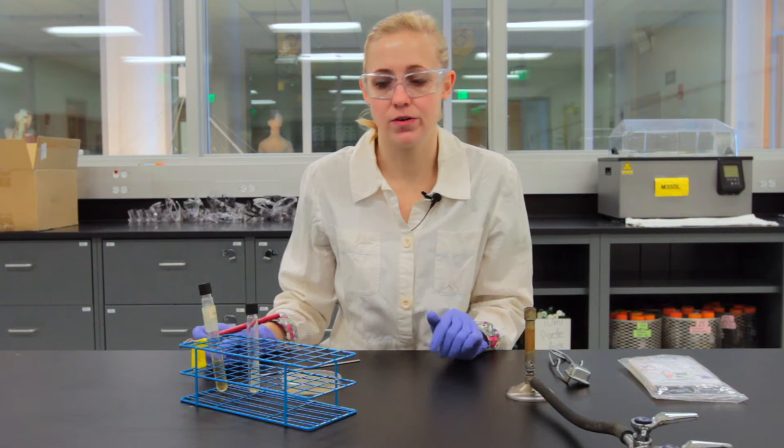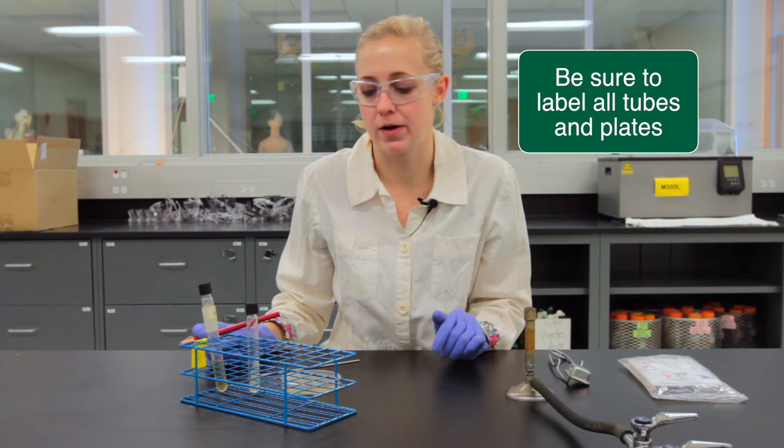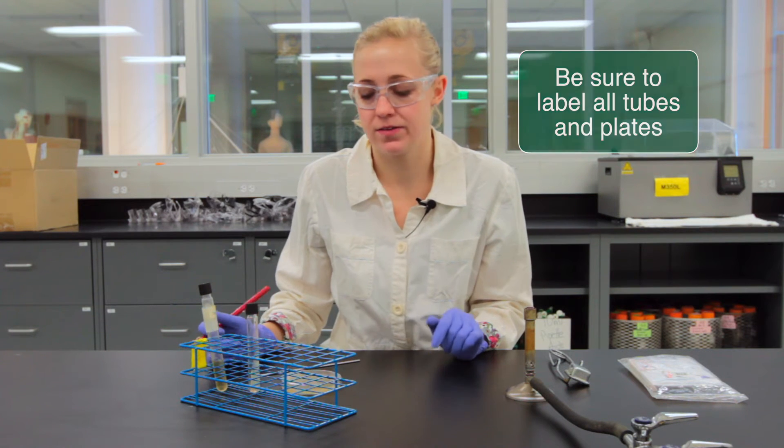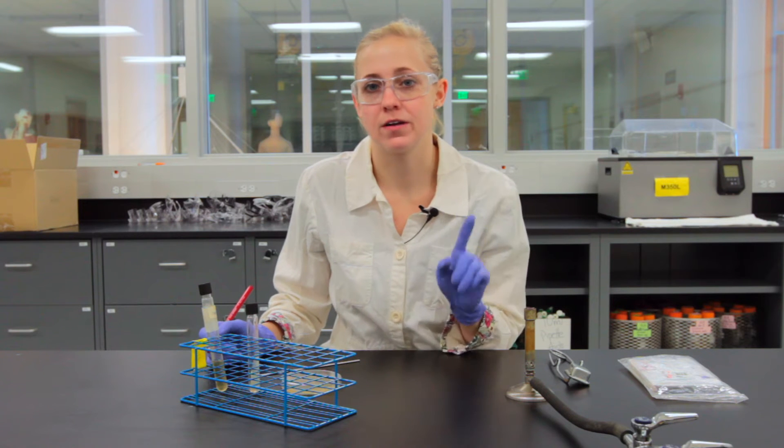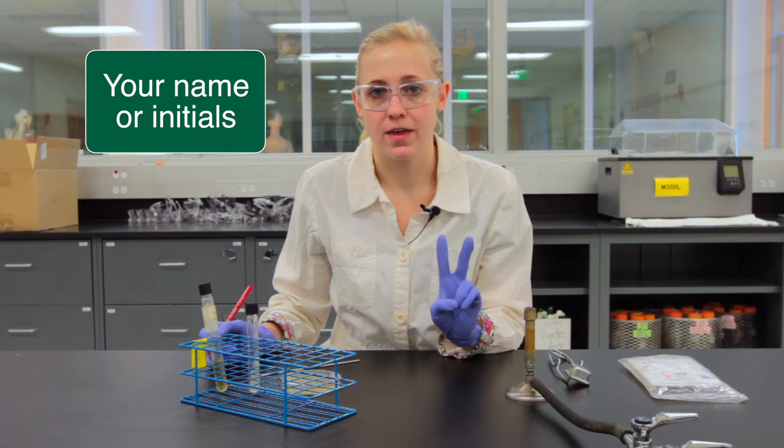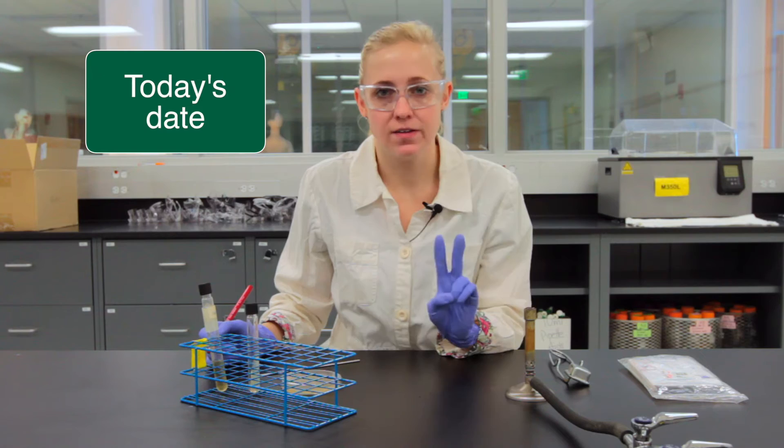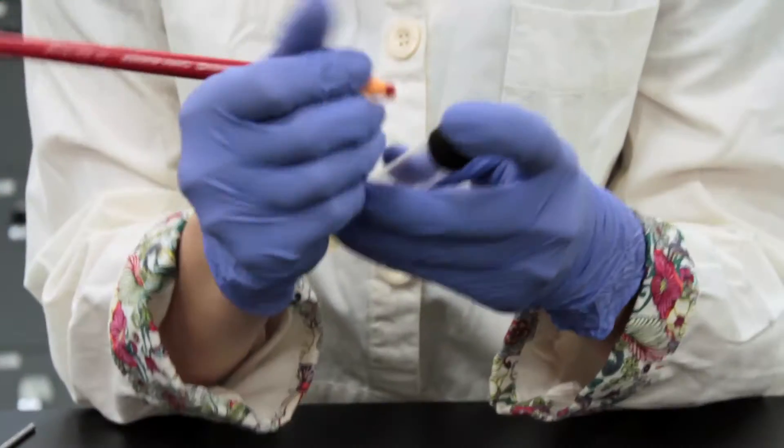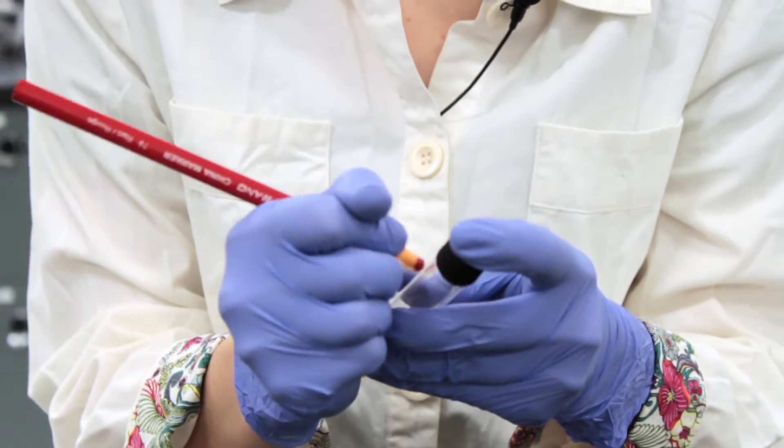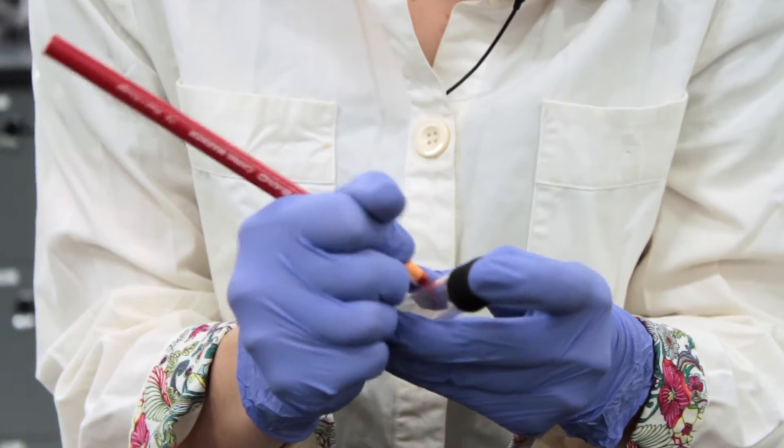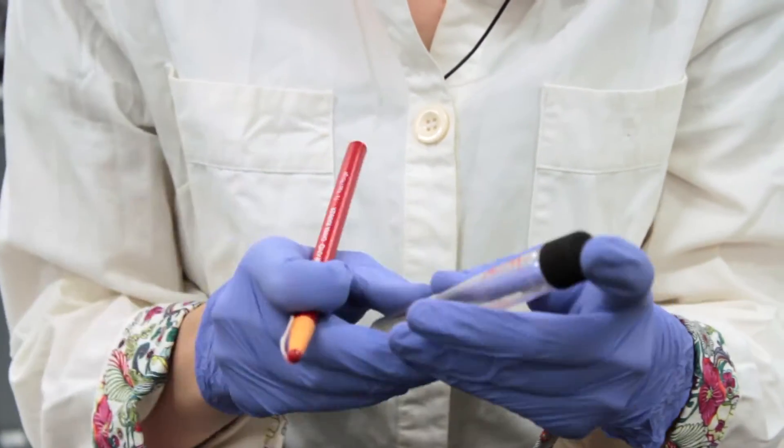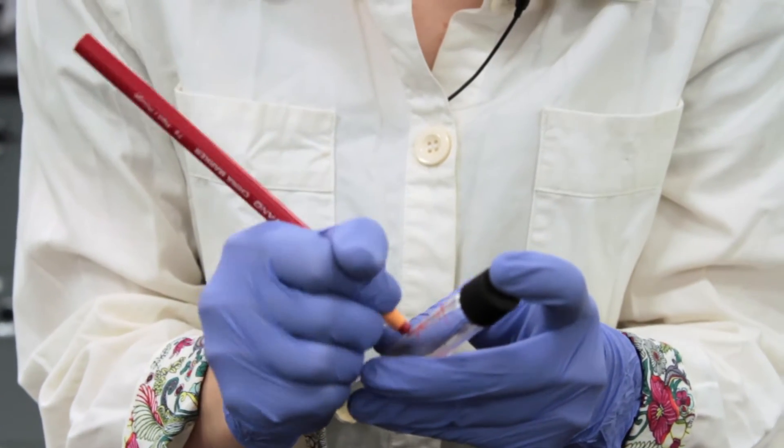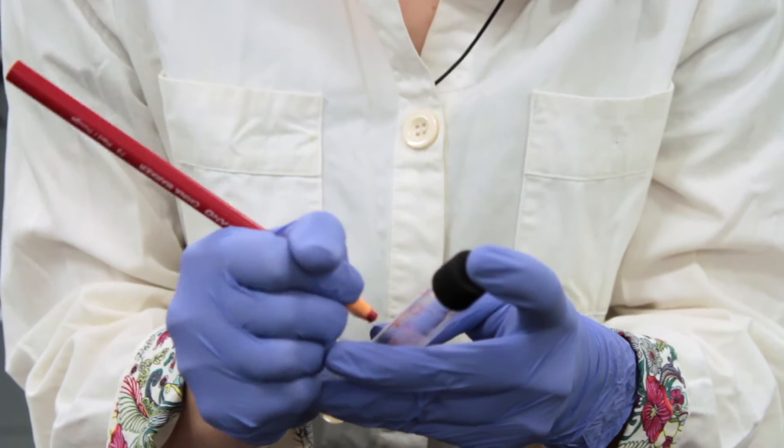So the first thing that we're going to do is label all of our slants and our plates. You're going to need to include three things: your name or your initials, the date, and the bacterial culture that you transferred. So for example on my nutrient agar slant I will write PF for Pseudomonas fluorescens which is the bacteria we're transferring today. I will include my initials EK as well as the date.